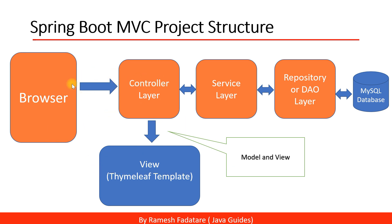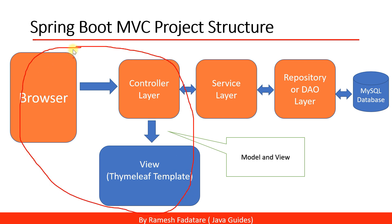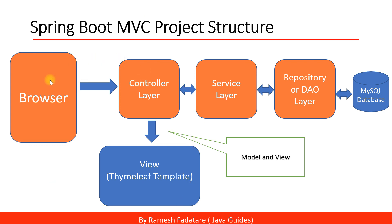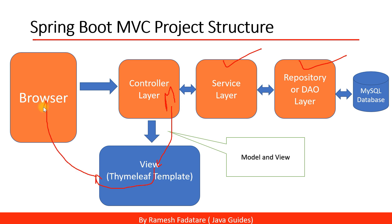With the MVC design pattern, the controller layer processes the request, gets data from the database using the service and repository layers, and that model data is bound to the view. The view then generates a web page that is displayed in the browser. It's a pretty simple Spring MVC architecture.